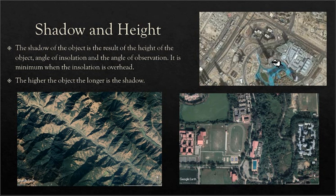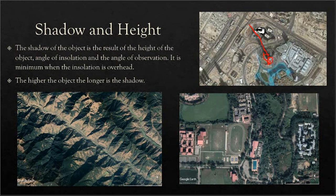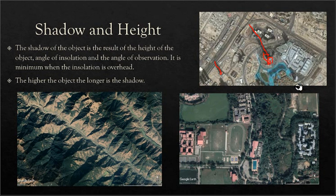Here you can see a building — the observation is overhead so the building is not showing much displacement. But if we observe the shadow, this building has a shadow reaching here. Similarly, here is another building and its shadow is reaching over here. This building has a height, and that's why the shadow extends this much. The angle of insolation — the sun is somewhere here — and these two factors have resulted in this shadow effect. This shadow basically indicates that the object has a height.